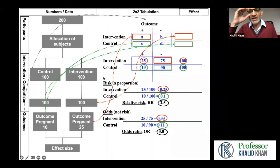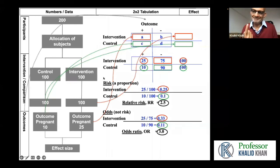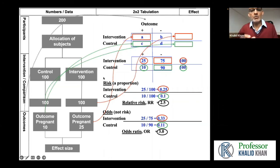Moise asks: how many studies need to be in a meta-analysis? The answer is more than one. As soon as we have two studies, we can perform a meta-analysis. Whether it is publishable or not depends on whether meta-analysis is conducted and also on whether your question is valuable to the journal.